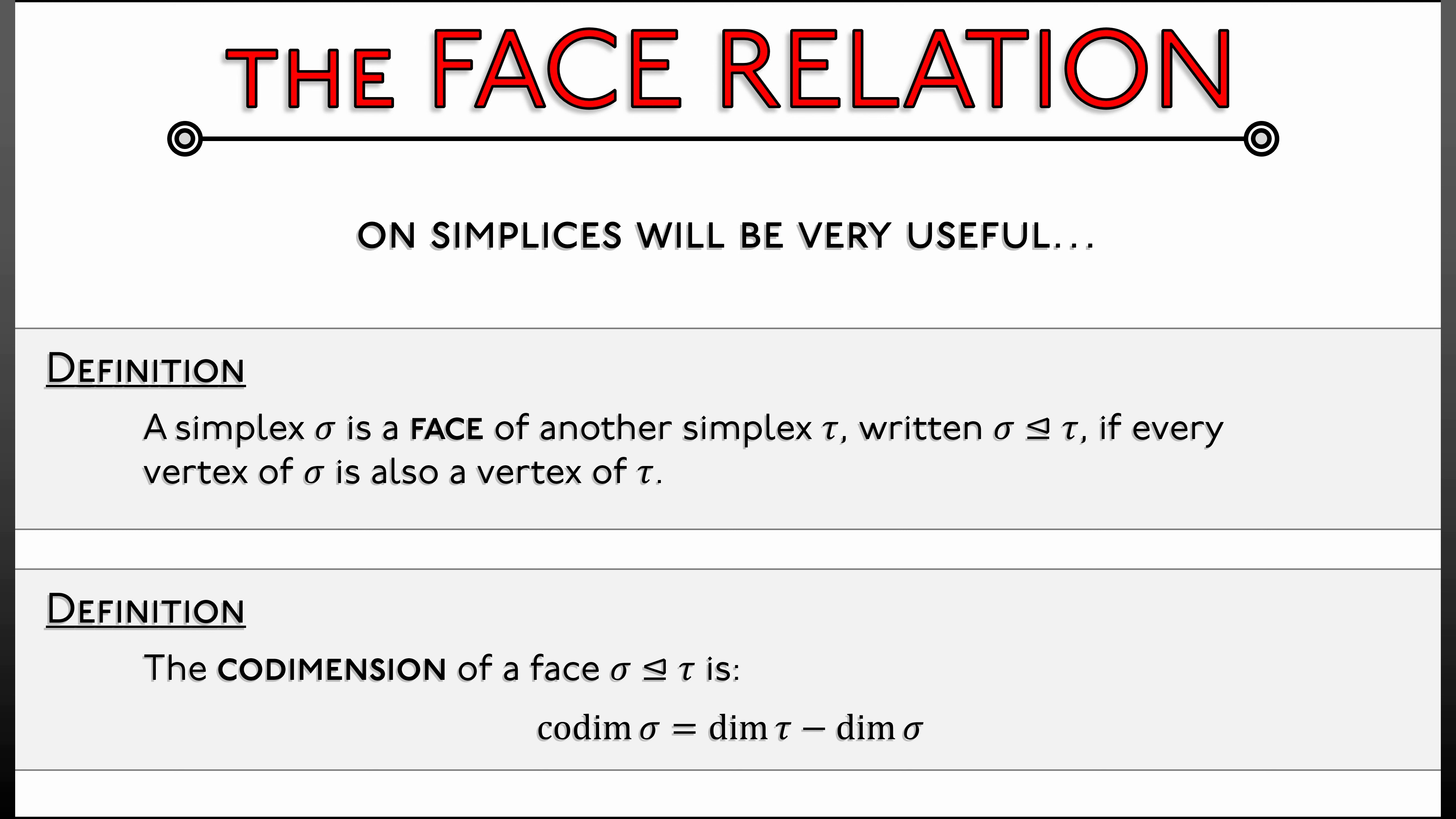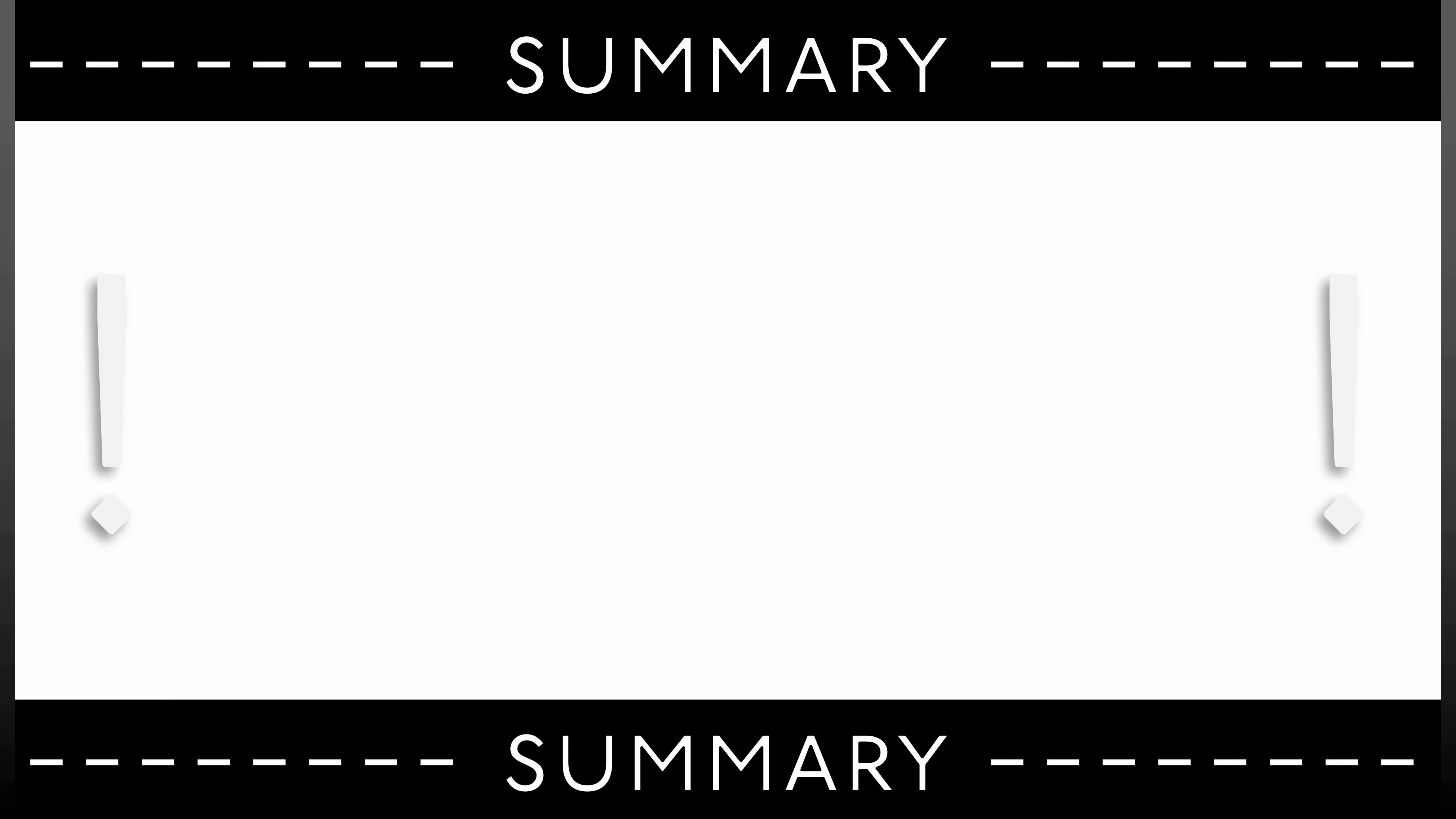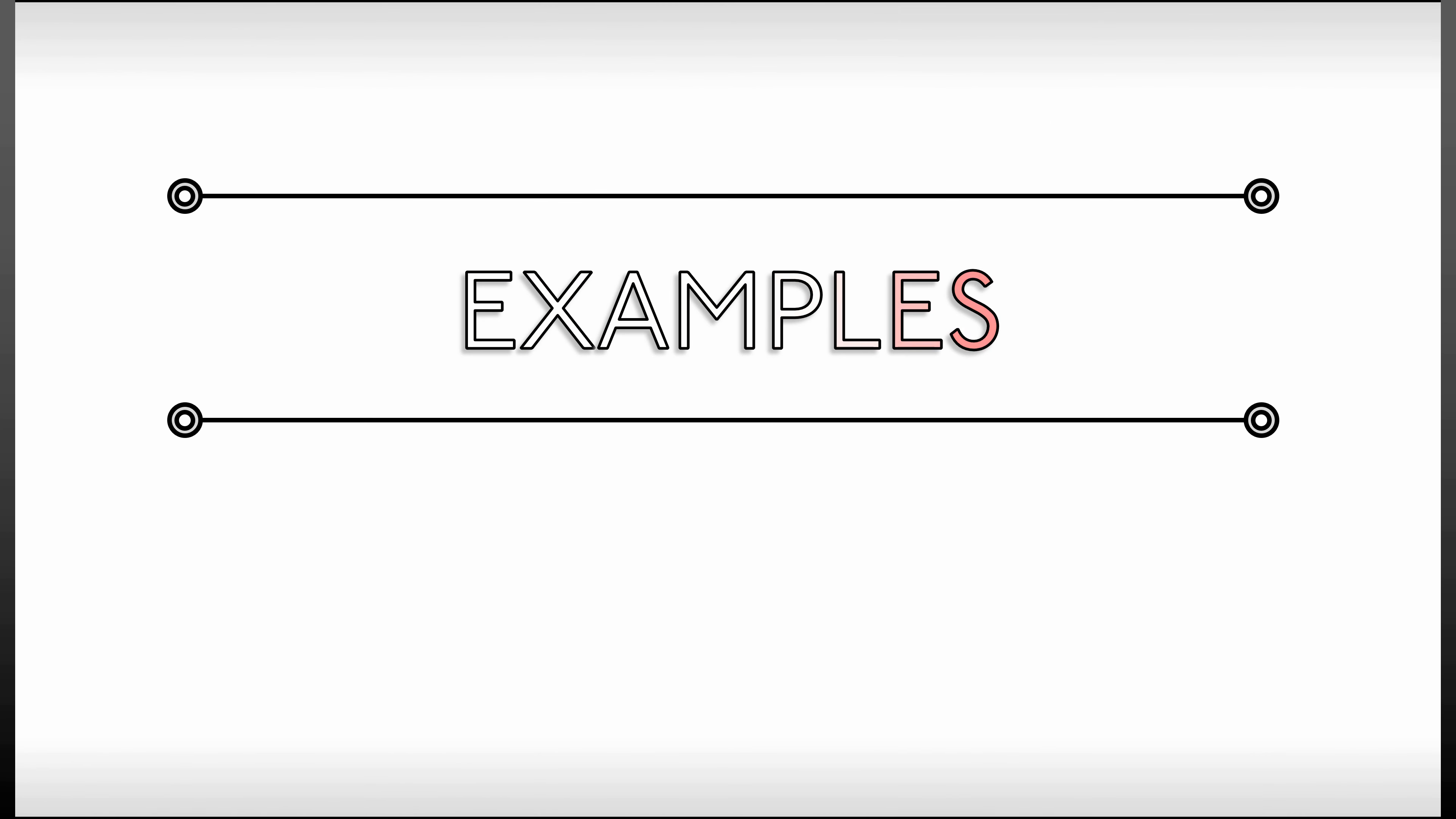But overall, this face relation really makes a lot of things very easy to state. For example, summarizing what we have done so far, we can say that a simplicial complex is a collection of simplices, that is, subsets of a fixed vertex set, that is closed with respect to the face relation. By closed, I mean every simplex contains all of its faces in the complex. That's it. That's the definition of a simplicial complex. It's time to turn to some interesting examples.